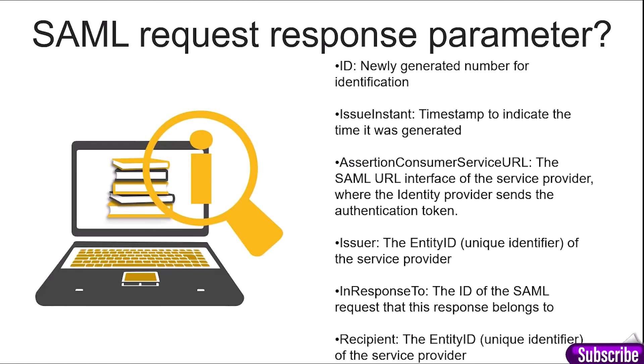Now let's look at SAML request response parameters. The parameters include: ID, which is the newly generated number of identification; issue instant, a timestamp to indicate the time it was generated; assertion consumer service URL, the SAML URL interface of the service provider where the identity provider sends the authentication token; issuer with the entity ID, a unique identifier of the service provider; in response to, the ID of the SAML request that this response belongs to; and the recipient, the entity ID unique identifier of the service provider.